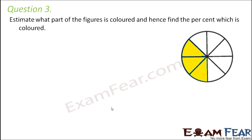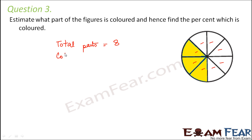Question number 3: Estimate what part of the figure is colored and hence find the percent which is colored. When you look at this figure, how many total triangles do you see? The total number of parts is 1, 2, 3, 4, 5, 6, 7, and 8 — so total parts is 8. And how many parts are colored? Colored parts are 1, 2, and 3 — so 3 parts are colored.